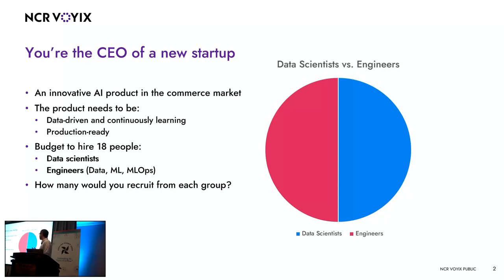The product needs to be data-driven, continuously learning, and production-ready. You have the budget to hire 18 people. Some of them will be data scientists, some will be engineers — and when I say engineers, I mean data, ML, MLOps, infrastructure, everything in this area. Given this scenario, how many would you recruit from each group?